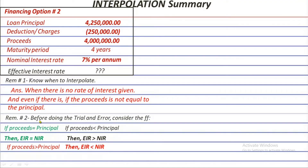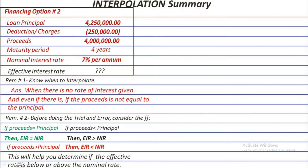Reminder number two: before you do the trial and error, consider these three things that have already been proven. Number one, if proceeds equal the principal, then the effective interest rate equals the nominal rate. Number two, if proceeds are less than the principal, the effective rate must be higher than the nominal rate. And lastly, if proceeds are higher than the principal, the effective rate must be lower than the nominal rate. Considering these will narrow down your options for the effective rate.